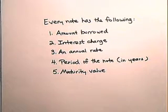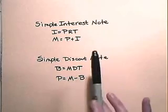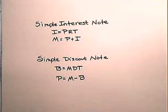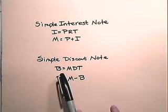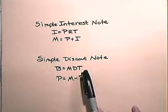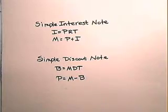Now let's compare simple interest notes and simple discount notes. A simple interest note has interest equal to principal times rate times time, and the maturity value is found by adding the principal plus the interest. With a simple discount note, the bank discount equals maturity value times discount rate times time, and the proceeds equals the maturity value minus the bank discount.